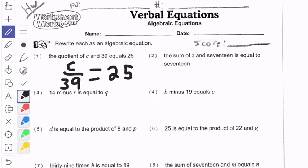The sum of Z and 17 is equal to 17. So the sum which is addition of Z plus 17 equals 17. And I'm sure you can figure out what Z equals there.